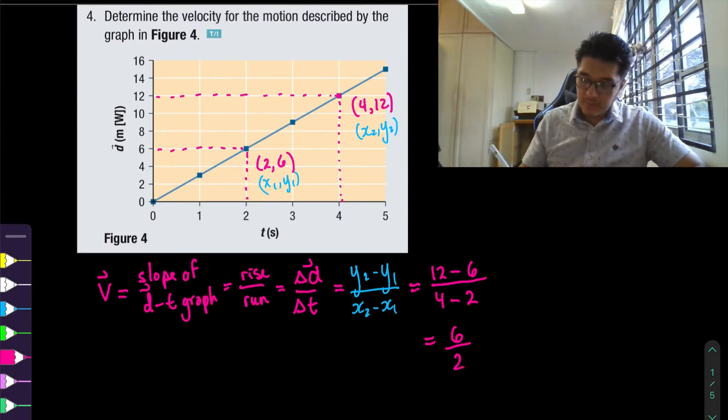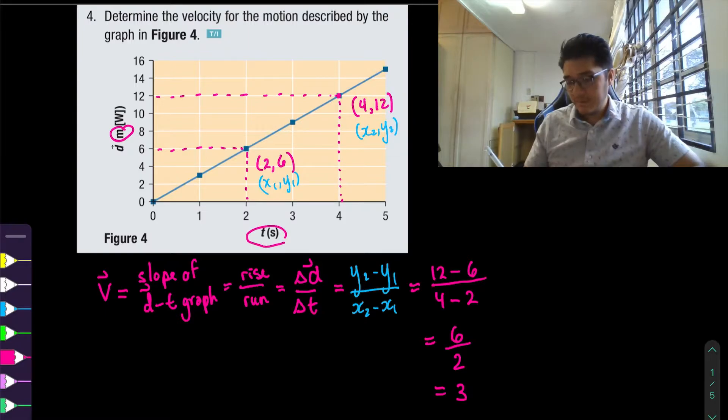6 over 2 is 3. So if we recall the units on the top were that of position which is meters and that in the bottom is in time so seconds. So this is meters per second.